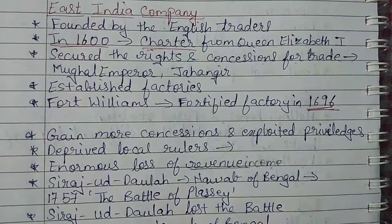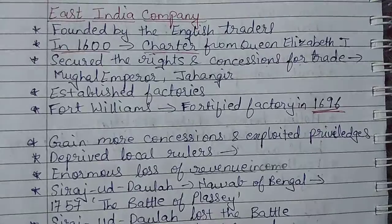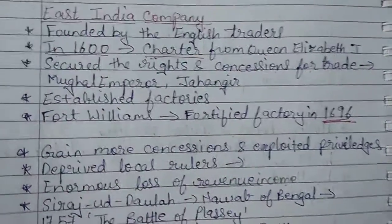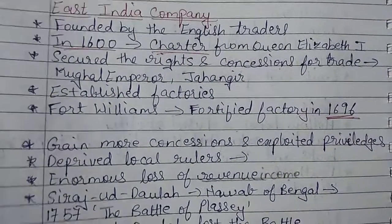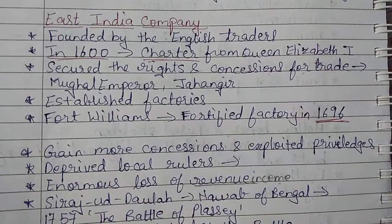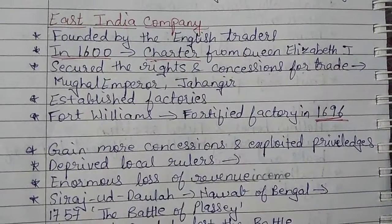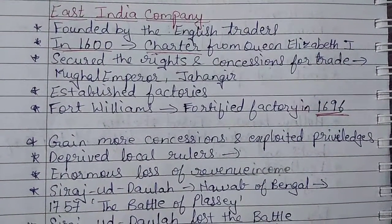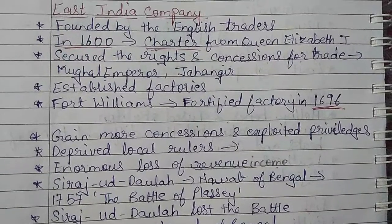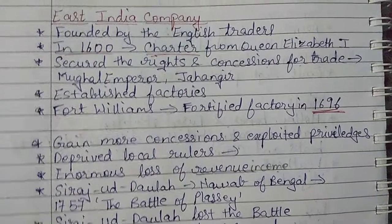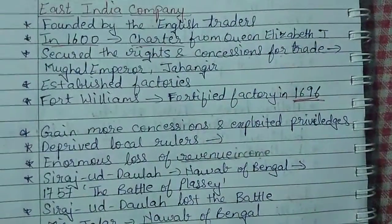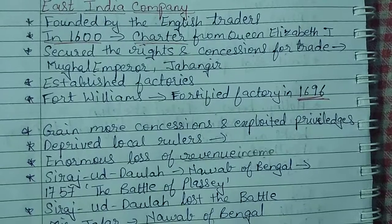The first fortified factory — that is, a factory with defense and military protection — was established in Calicut in 1696. With the help of the rights and concessions they got for trade, the East India Company established many such factories.